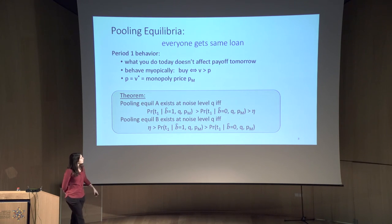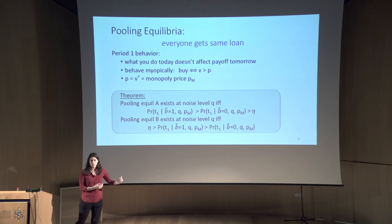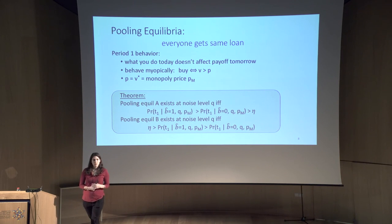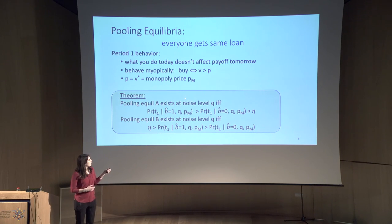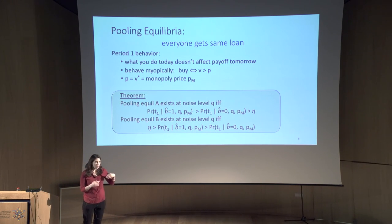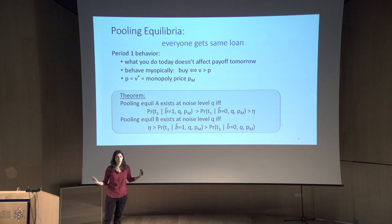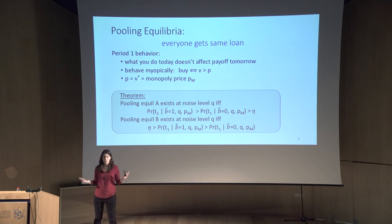If we pool, things are pretty simple: everyone gets the same loan regardless of the bit or their behavior. If that's the case, you shouldn't take into account that you're playing this more complicated game, because what you do on day 1 doesn't affect your payoff tomorrow. Consumers behave myopically and buy the good if and only if their value is above the price. Knowing this, the seller posts the monopoly price. The pooling equilibrium exists exactly when, for both possible realizations of the noisy bit B-hat, the lender wants to treat both realizations the same — showing them both the same loan.